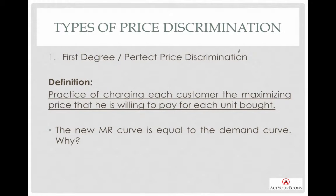The first kind of price discrimination is known as first degree, or perfect price discrimination. The word 'perfect' simply means that the producer is going to uncover each and every willingness to pay of the consumer and charge each consumer a different price. It is the practice of charging the customer the maximum price that he or she is willing to pay for each unit bought. In this case, the new marginal revenue curve is equal to the demand curve — I will relate this with a diagram shortly.